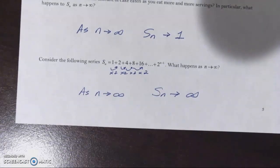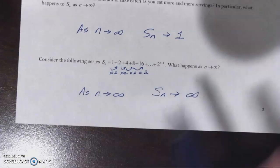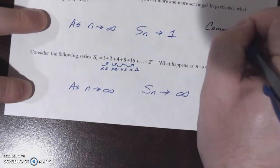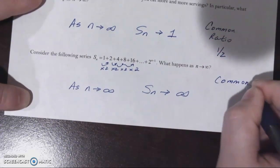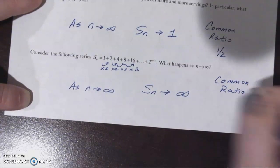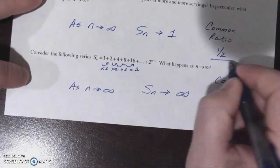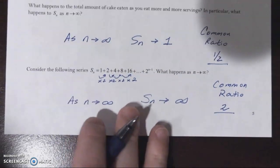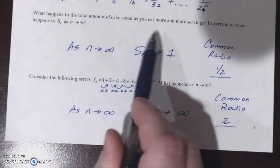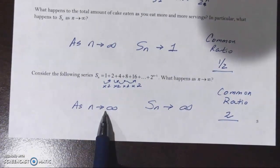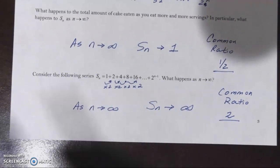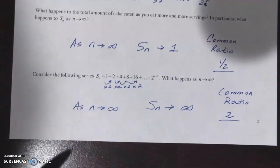Why could our cake example approach an actual number, whereas this sequence approaches infinity? In example 5, the common ratio was one half. In this infinite series, the common ratio was 2. Maybe these values have something to do with why the sum of one series approached an actual number, whereas as these terms go off to infinity, the sum would not approach an actual number — it continues to go off to infinity as well.